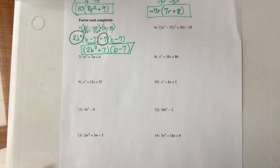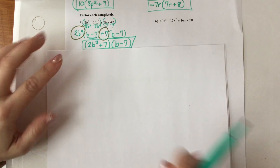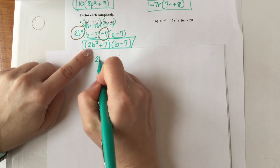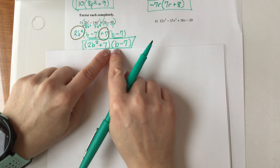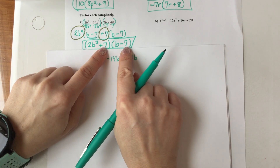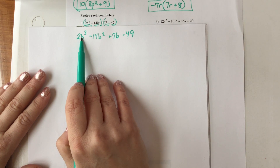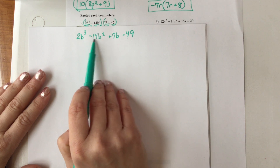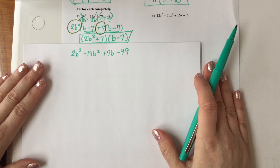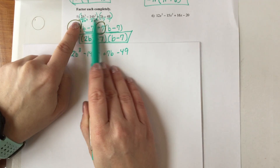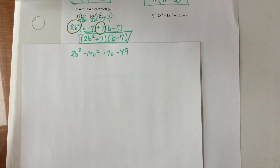Remember I said factoring is like doing things backwards — think of this as unfoiling. If I FOIL (2B² + 7)(B - 7): first, 2B² times B is 2B³; outside, 2B² times negative 7 is negative 14B²; inside, 7 times B is 7B; last, 7 times negative 7 is negative 49. This matches the original problem exactly — 2B³, negative 14B², 7B, negative 49. So factoring is totally going backwards.